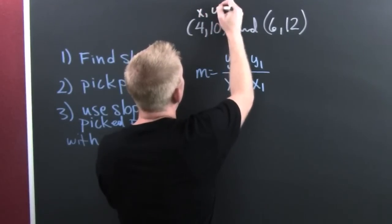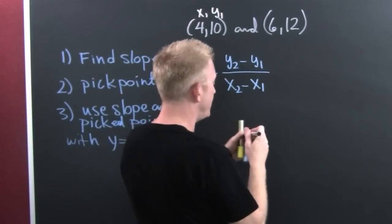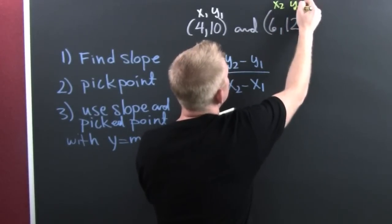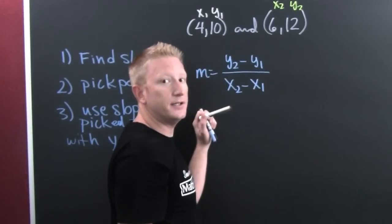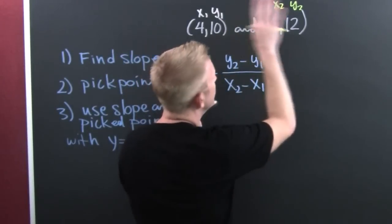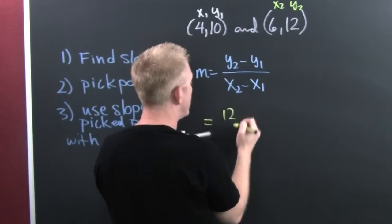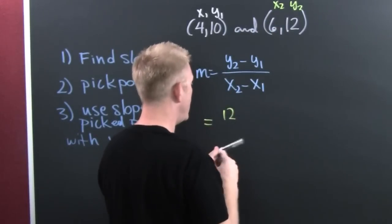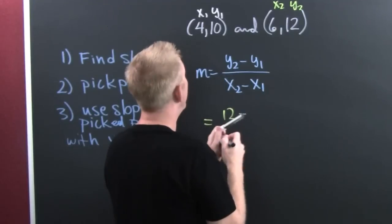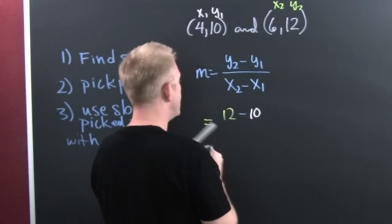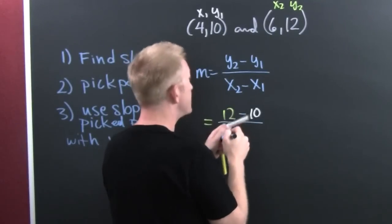This will be x1, y1, and then this will be x2, y2. And it doesn't matter to you which one is your first and which is your second, as long as you keep it straight. So my y2 is 12 and that's minus my y1 which is 10.